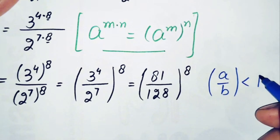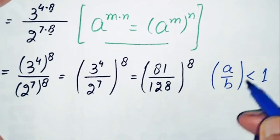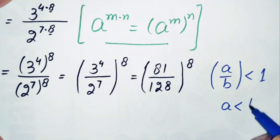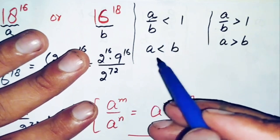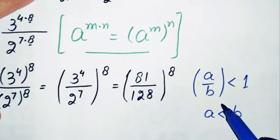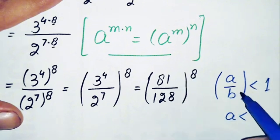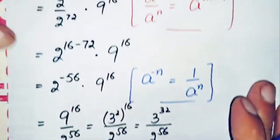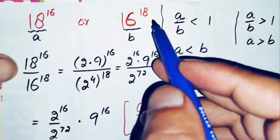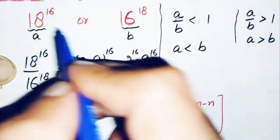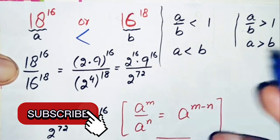According to our first result, if a divided by b is less than 1, then a must be less than b. So using this result, since a is 18 raised to power 16 and b is 16 raised to power 18, we conclude that 18 raised to power 16 is smaller than 16 raised to power 18. This is our final answer.